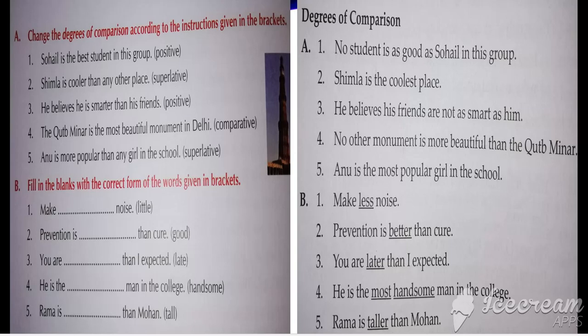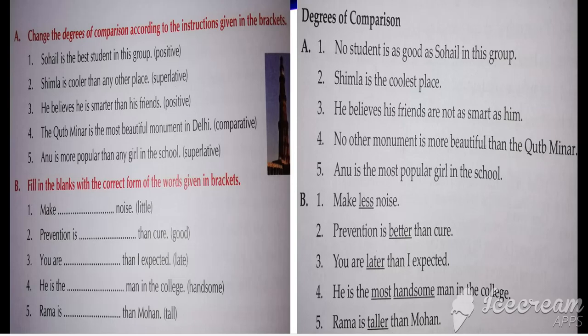Now see the third: 'He believes he is smarter than his friend.' You have to convert this into the positive degree. 'Smarter than' shows it is a comparative statement. How can you convert it? The answer is: 'He believes his friend is not as smart as him.' This is the positive statement.